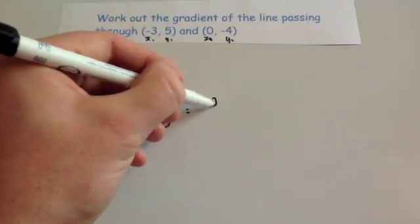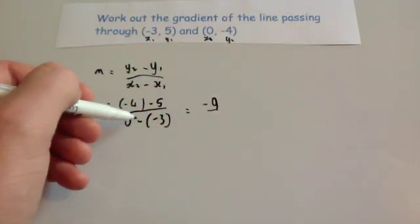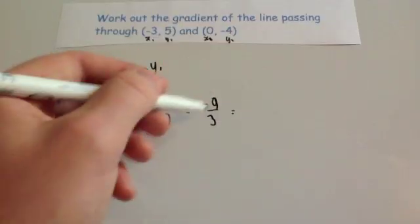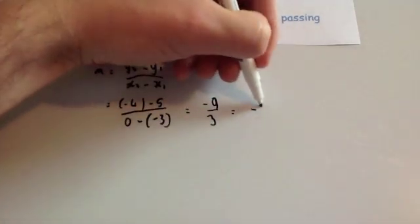Minus 4 take away 5 would be minus 9. And 0 minus minus 3, well 0 plus 3 is 3. And minus 9 divided by 3 will give you the gradient of minus 3.